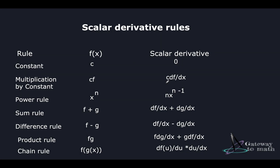Let us now quickly look at some important formulas for scalar derivative rules. The derivative of a constant is 0. If you're multiplying a function with a constant, you take the constant out and find the derivative with respect to the function — this becomes c·(df/dx). For the power rule, you take the power out as a coefficient and subtract 1 from the power, so x^m becomes m·x^(m-1). For the sum rule, f plus g, you differentiate both functions independently and retain the plus sign: df/dx plus dg/dx.